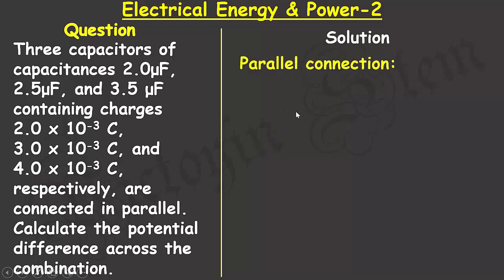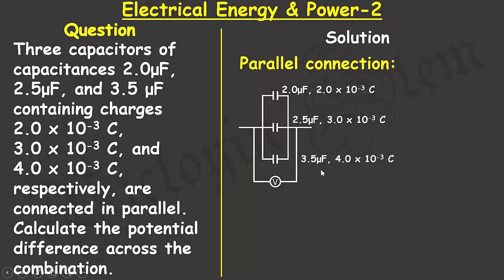Now, I will sketch the circuits, a simplified circuit diagram. As I mentioned earlier, each of the three capacitors have capacitances of 2.0 microfarad, 2.5 microfarad, and 3.5 microfarad,